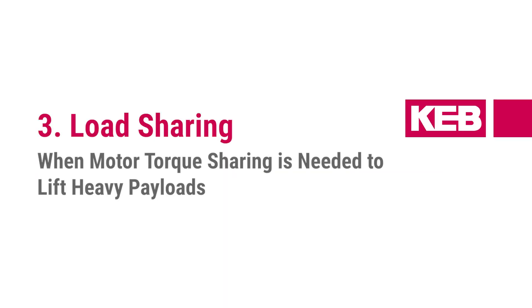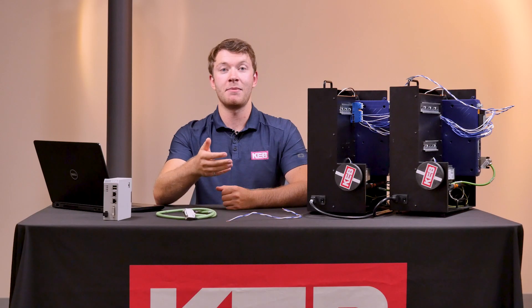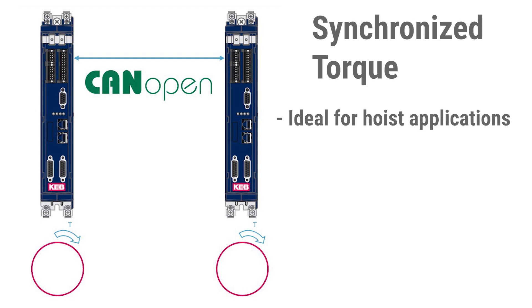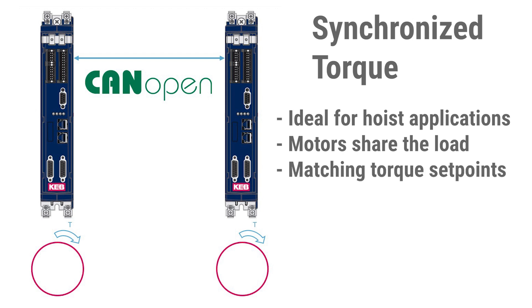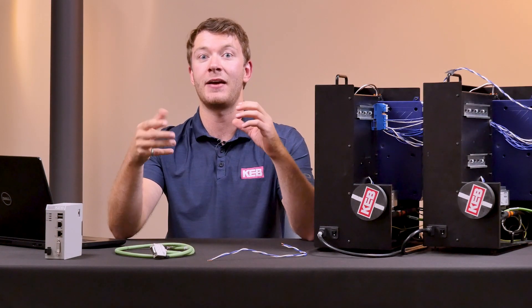The third type of master-follower is load sharing. This is when the torque of the master drive is sent to the follower drive. This is important for applications like hoists, where two motors run together and must share the load between each other. Torque set points have to match so the motors aren't fighting each other and can evenly distribute the load on a rigidly coupled shaft.